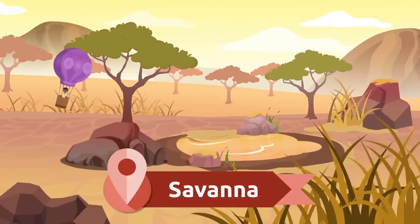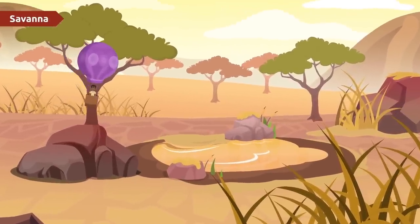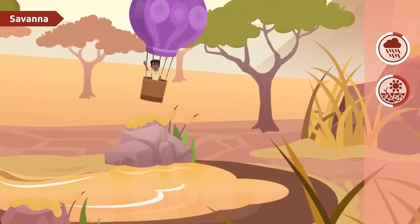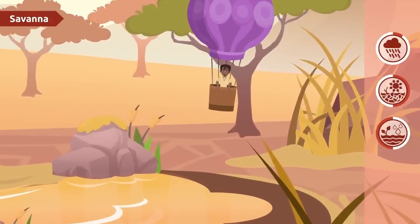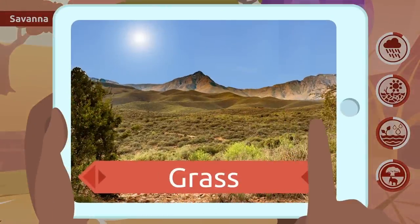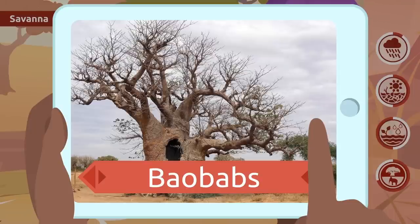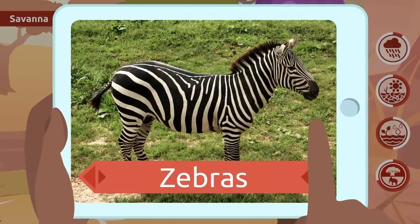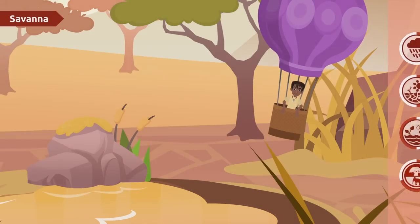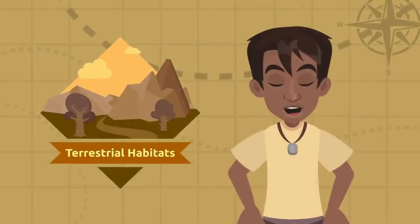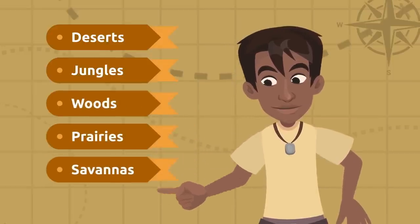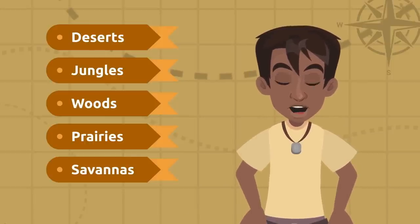Another habitat with little vegetation is the savannah. Savannahs are usually dry areas with very little rain; however, there are two periods — a dry season with low temperatures and a humid season with warm temperatures and lots of rain. In the savannah we find grass, herbs, non-woody plants, and some trees like baobabs. Many herbivores like elephants, zebras, and giraffes live here, as well as carnivorous animals like lions and cheetahs. Today we've seen the terrestrial habitats: deserts, jungles, woods, prairies, and savannahs.